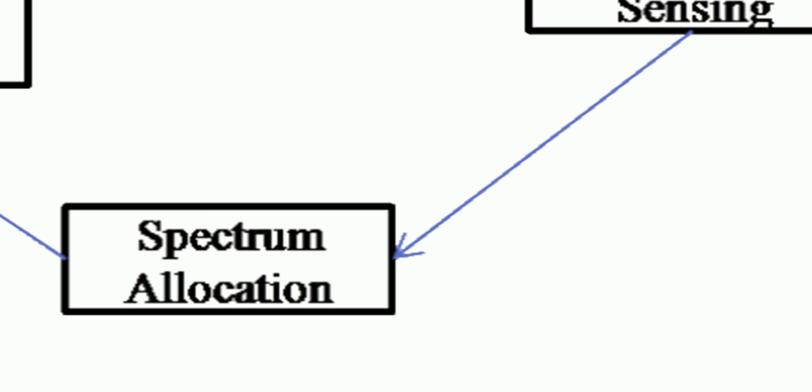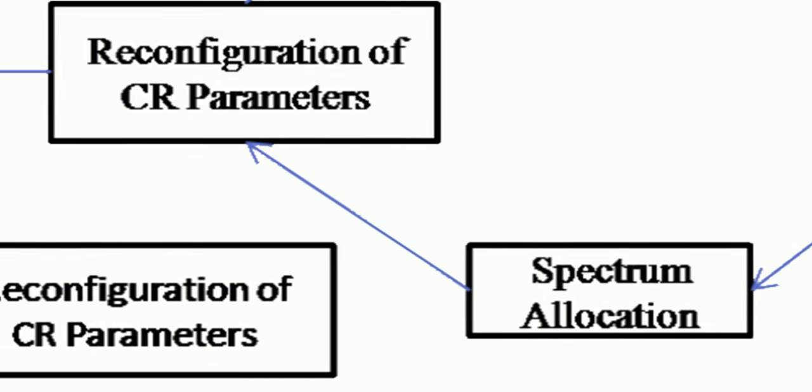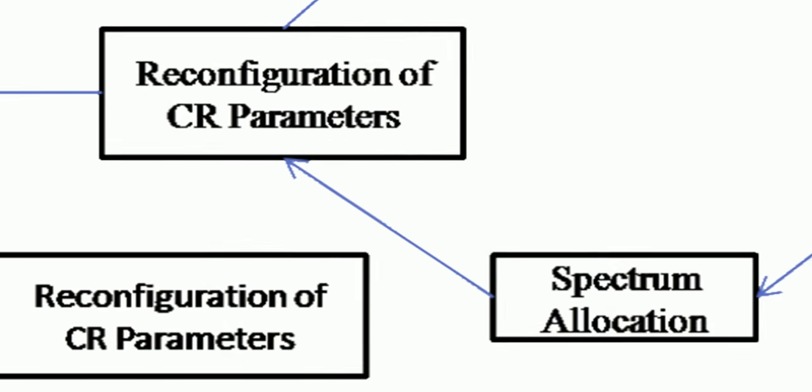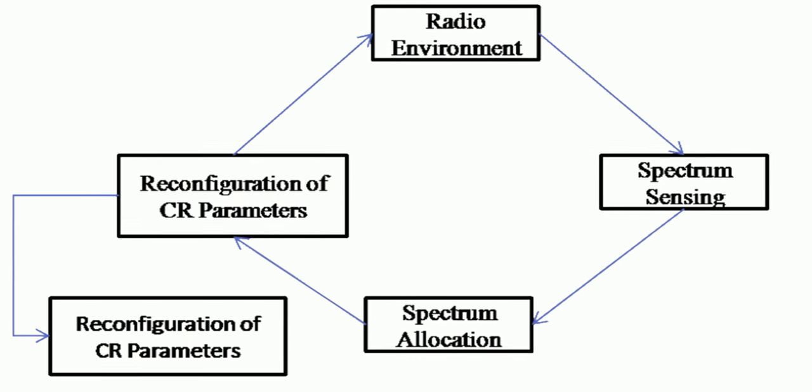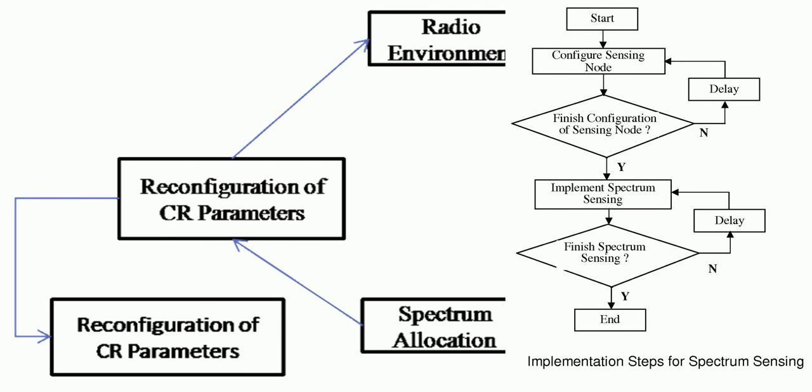This spectrum allocation or reallocation, as we discussed earlier like the case of OFDM subcarrier changing, needs a reconfiguration of the CR parameters which may include a change in the modulation, a change in the protocol or a change in other parameters. Once the transceiver is reconfigured for the new spectrum, it can then again start transmitting and receiving over the new radio environment defined by new sets of CR parameters.